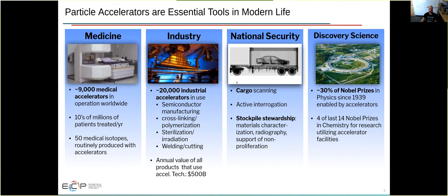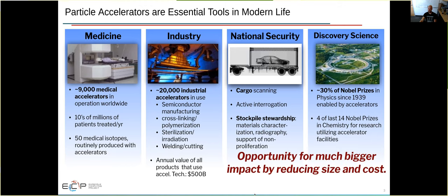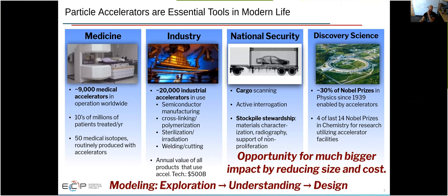But there are other applications of accelerators as well. Medical applications, for example. There are 9,000 medical accelerators in operation worldwide. These are used for things like radiation treatment for cancer or in the production of medical isotopes. There's also about 20,000 industrial accelerators that are used in various capacities: semiconductor manufacturing, sterilization of food. And there's also a number of national security applications as well. The annual value of all products that use accelerator technology is estimated to be 500 billion. So the point we're trying to make is there's opportunity to make a bigger impact with particle accelerators by reducing their size and cost. And modeling plays a role here because it allows us to explore and understand the underlying physics and can also aid in tuning the design of specific prototype accelerator designs.